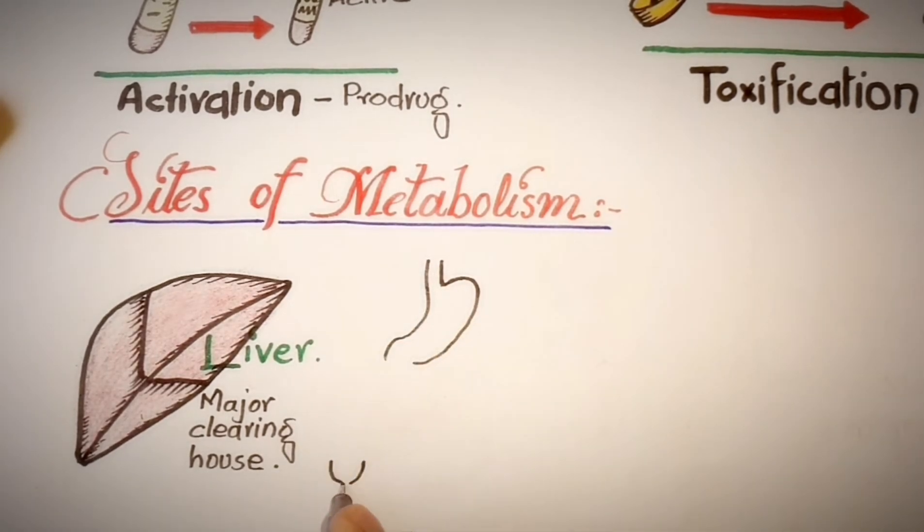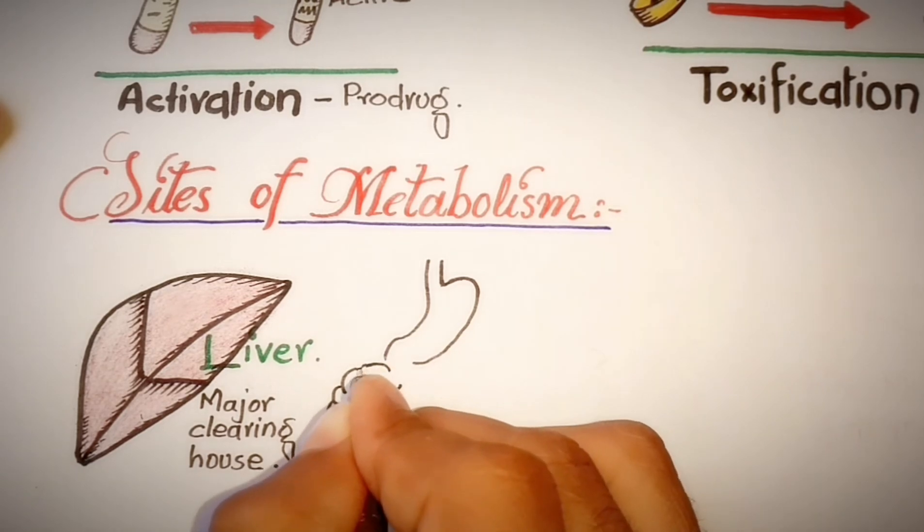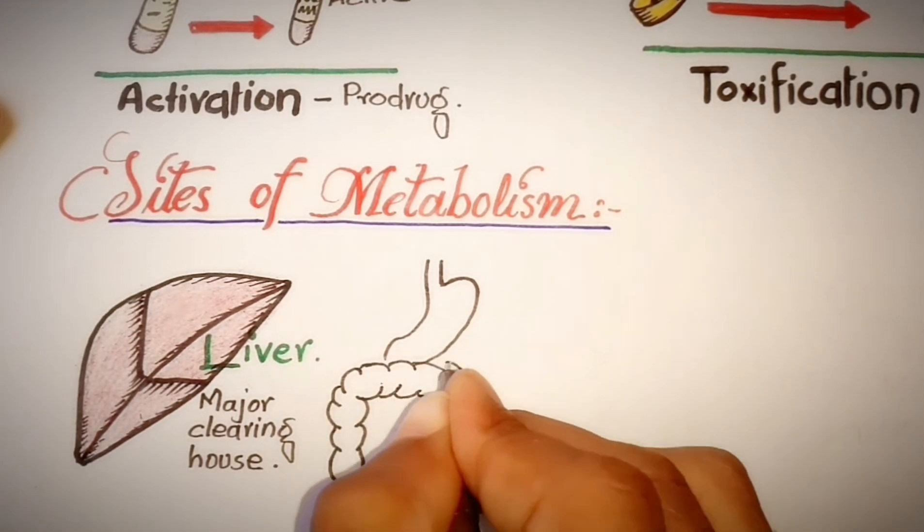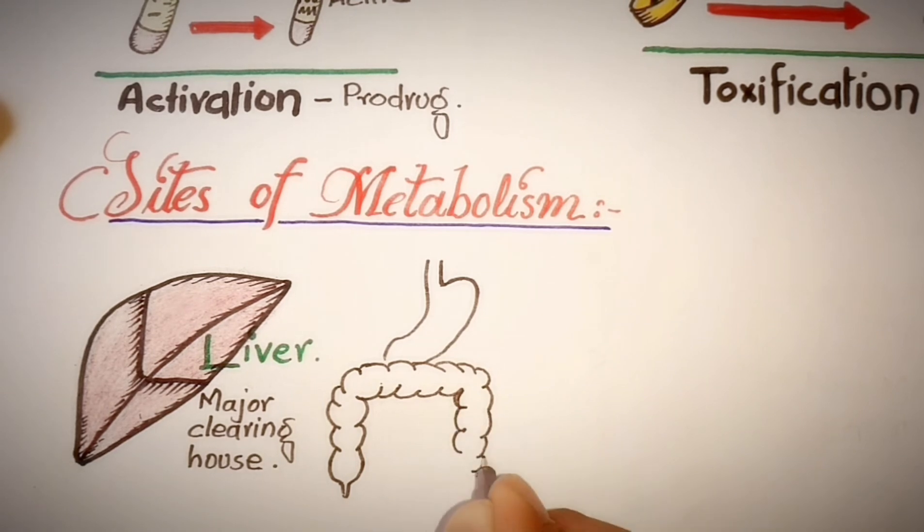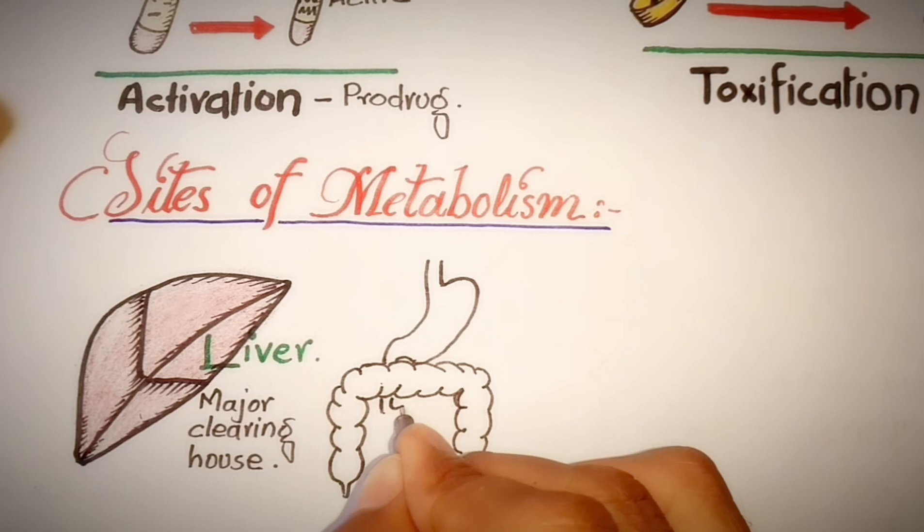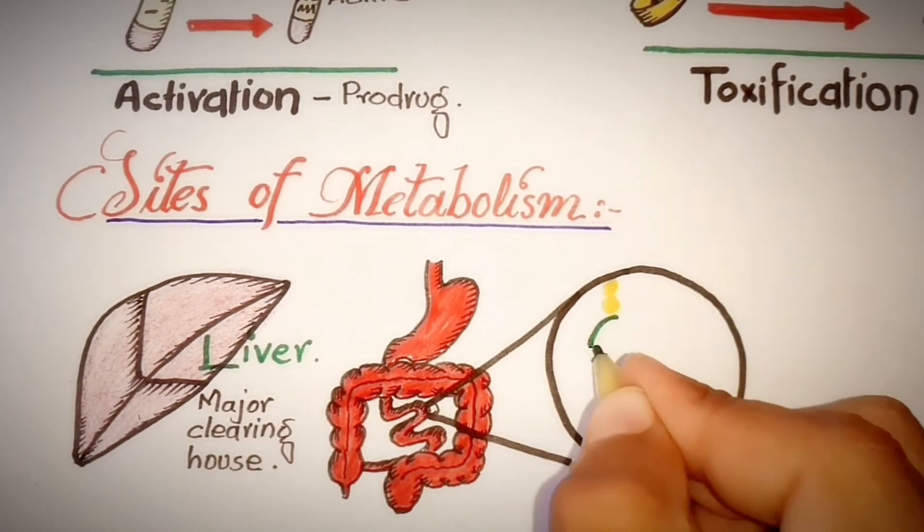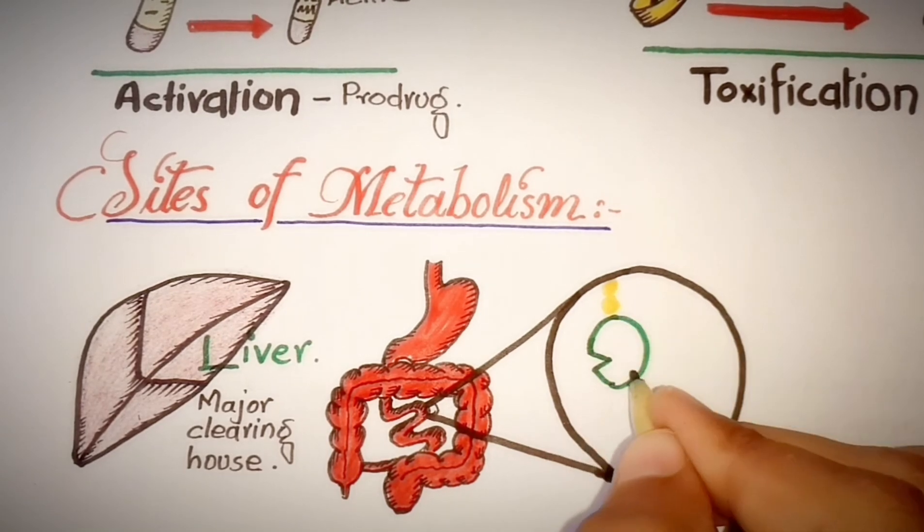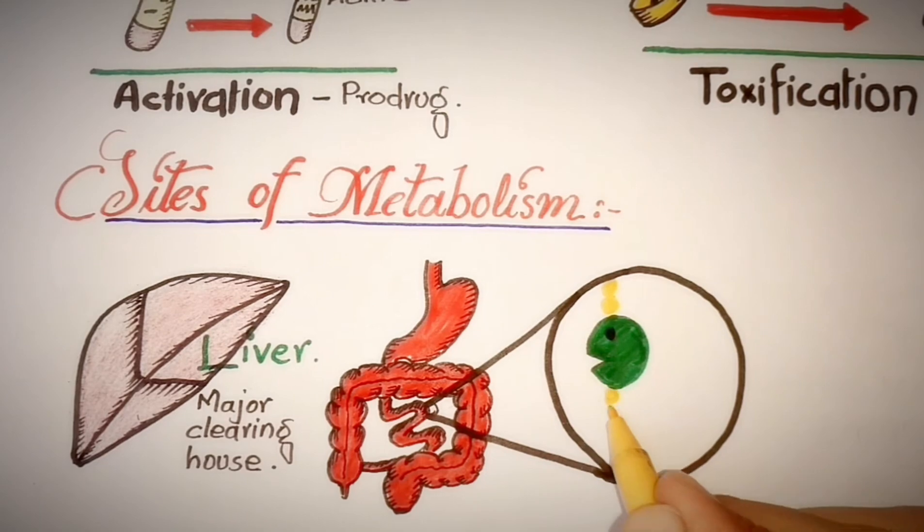Second major metabolic site for drugs is the GI tract. Drug metabolism also can occur in other parts of the GIT, but the small intestine plays a central role in drug metabolism. The high concentration of xenobiotic metabolizing enzymes in the epithelial cells of the GI tract are responsible for drug metabolism.